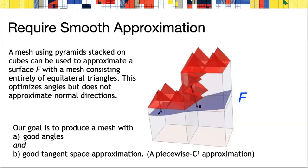An example to keep in mind is that it's possible to approximate a surface in C0 by a surface isotopic to the surface consisting entirely of equilateral triangles. This is done by taking a cubical mesh approximating the surface F and then stacking equilateral triangle pyramids on top of the faces. But they won't have normal vectors that approximate the normal vectors of F.